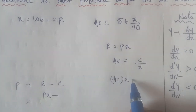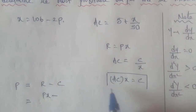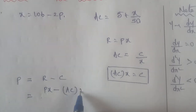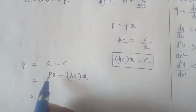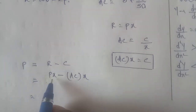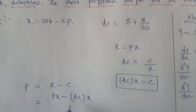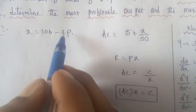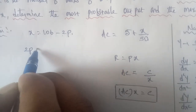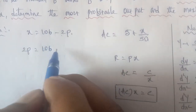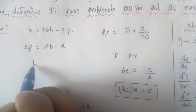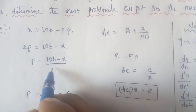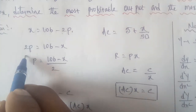From the demand curve x equal to 106 minus 2p, we solve for p. Adding 2p to both sides and rearranging: 2p is equal to 106 minus x. Dividing by 2, p is equal to 106 minus x divided by 2.